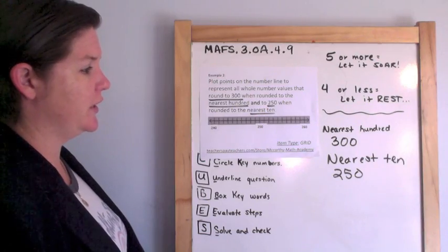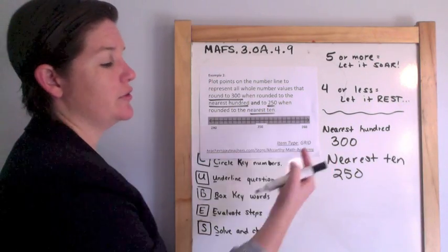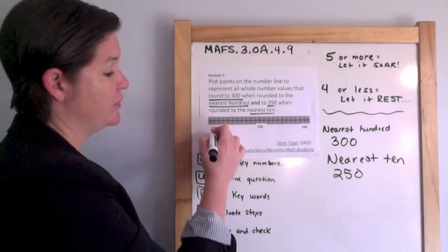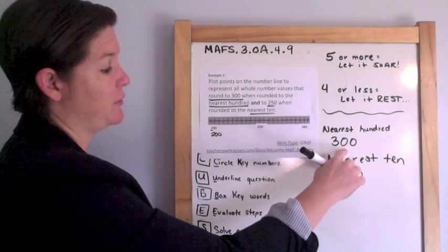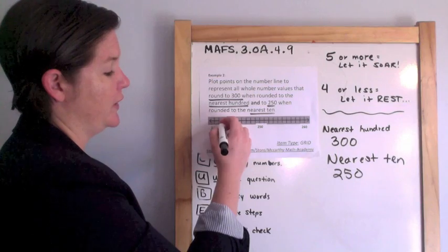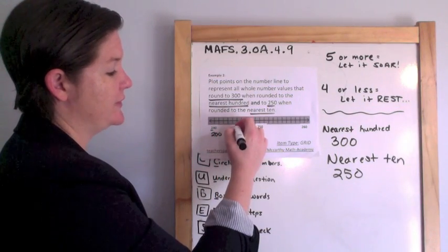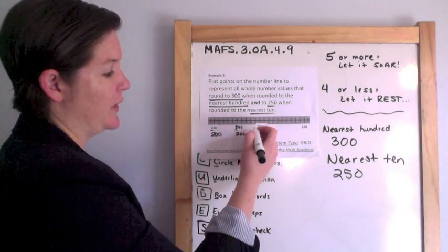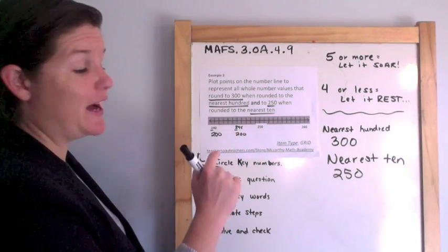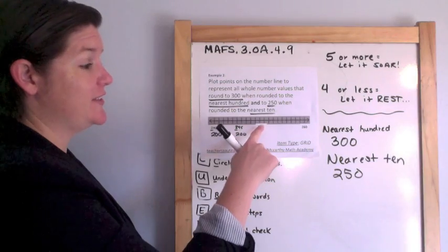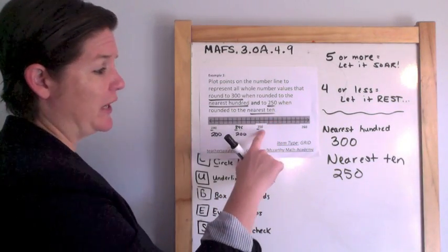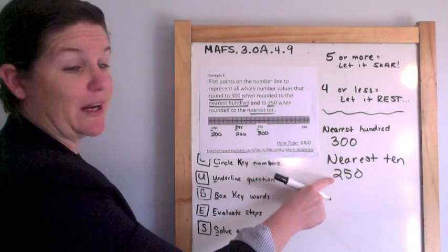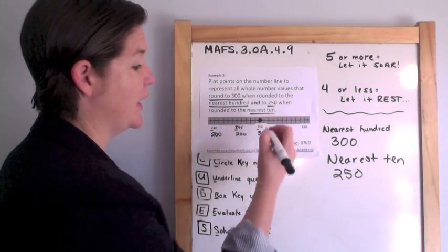So I'm going to focus on rounding to the nearest hundred first. If I were to round two hundred forty, that would be two hundred to the nearest hundred. But I need it to be three hundred. Let me skip a little. Two hundred forty-five would still round to two hundred. So I need this digit in the tens place to be a five or higher. So I have to start at two hundred fifty. This is two hundred fifty, and I'm rounding to the nearest hundred. That would be three hundred. And it also rounds to two hundred fifty for the nearest ten. So I'm going to plug a dot right there.